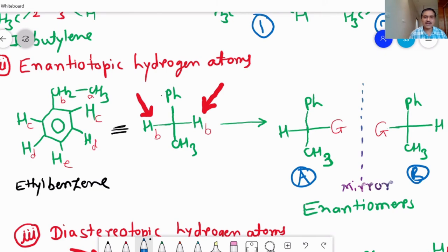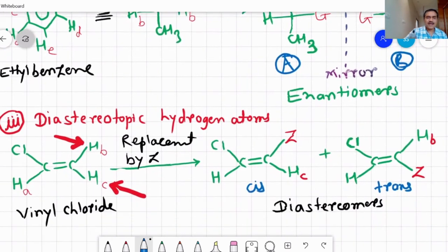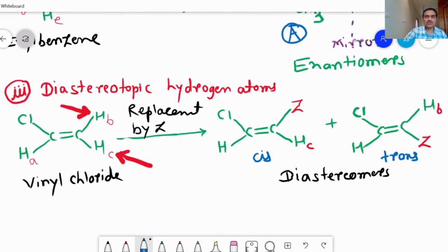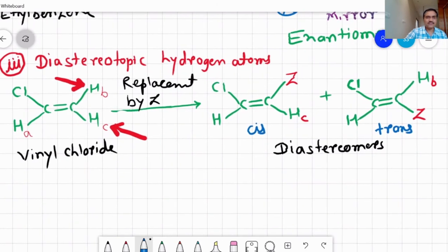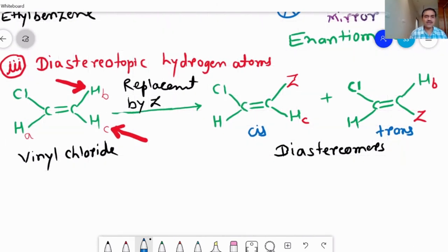And third one, diastereotopic hydrogen atoms. We consider the example vinyl chloride, where there are three types of protons: HA, HB, and HC. And we consider this test for HB and HC.